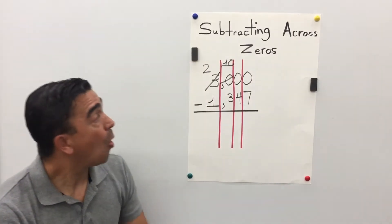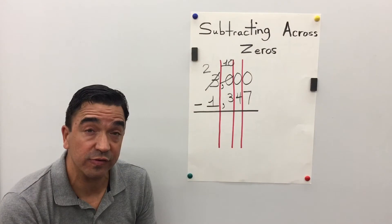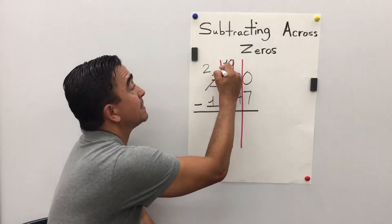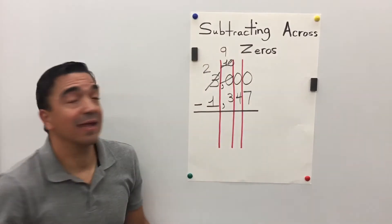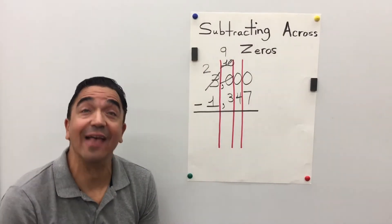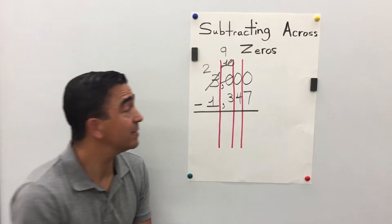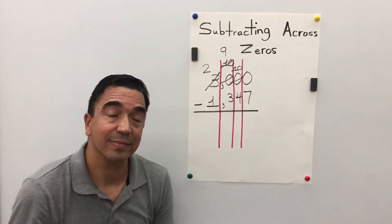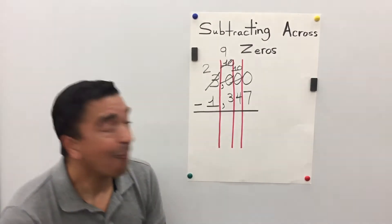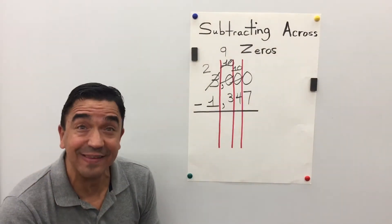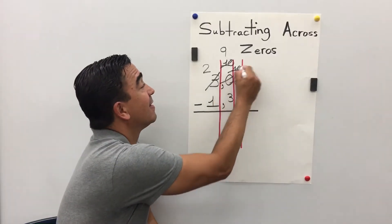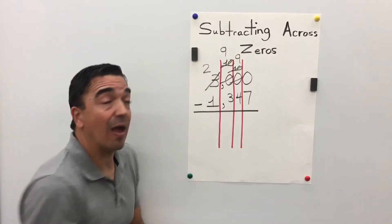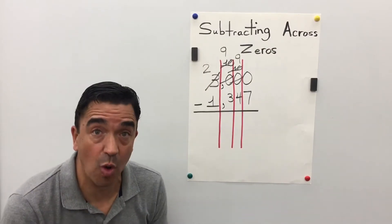Now, we're gonna take our 10 hundreds and we're gonna take 1 away and bring it into the tens place as 10 tens. Now, we're gonna borrow from the 10 in the tens place. There's nine left and we're gonna take that 10 and change it into 10 ones.